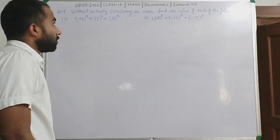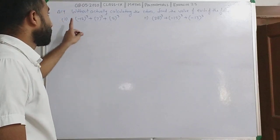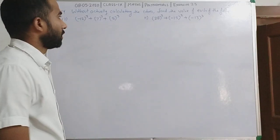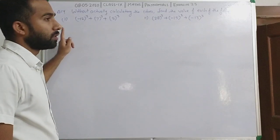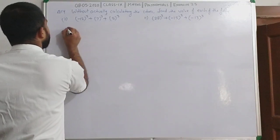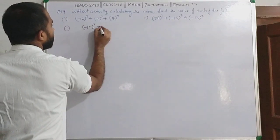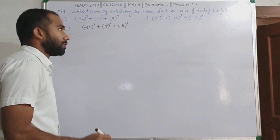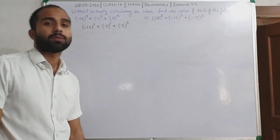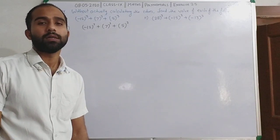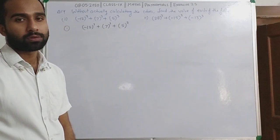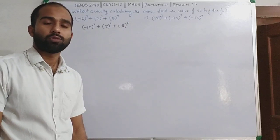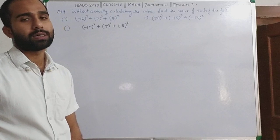Now this is question number 14 of exercise 2.5. Question says: without actually calculating the cubes, find the values of each of the following. First part: minus 12 cube plus 7 cube plus 5 cube. आपको directly cube नहीं करना है, identity का use करना है. अगर a plus b plus c या x plus y plus z 0 होता है तो identity short हो जाती है: x³ plus y³ plus z³ is equal to 3xyz.